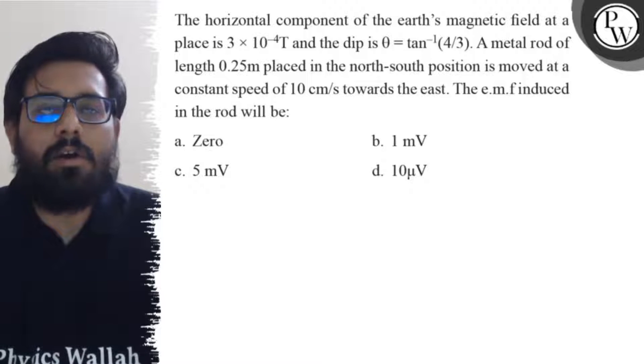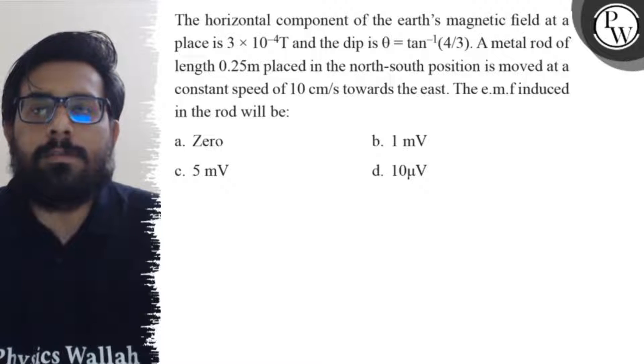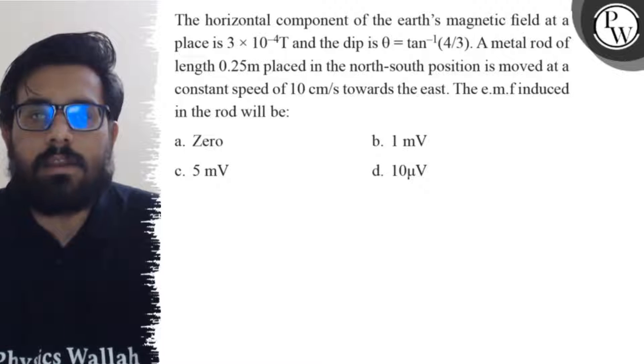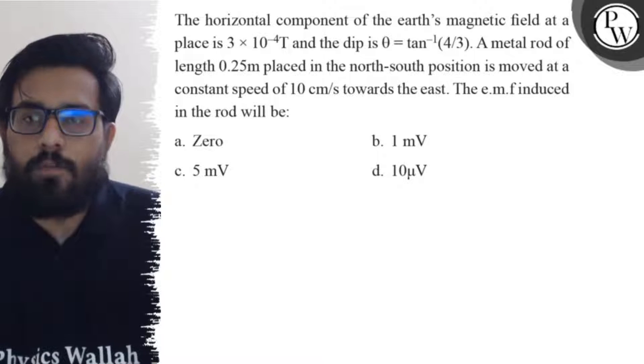Hello everyone, so let's see the question. The horizontal component of the earth's magnetic field at a place is 3 into 10 to the power minus 4 tesla and the dip is tan inverse 4 by 3.